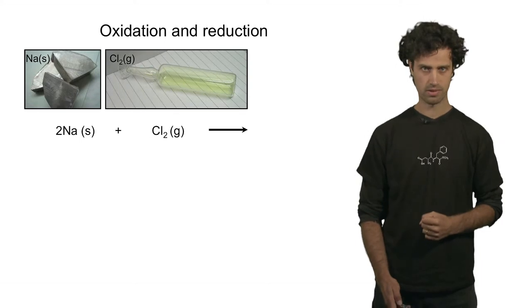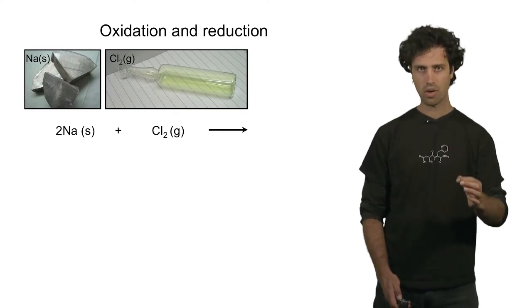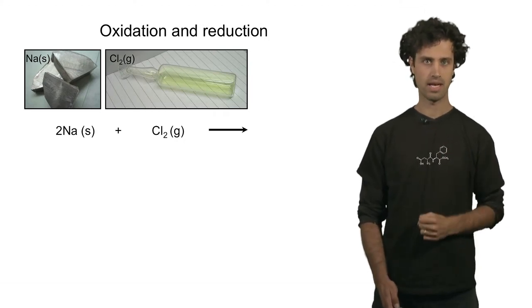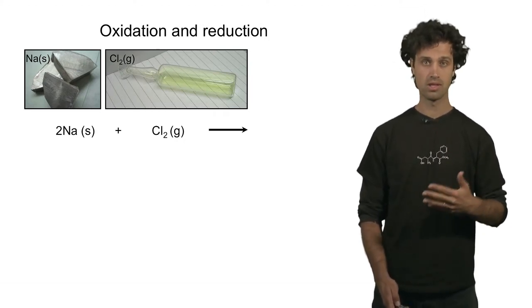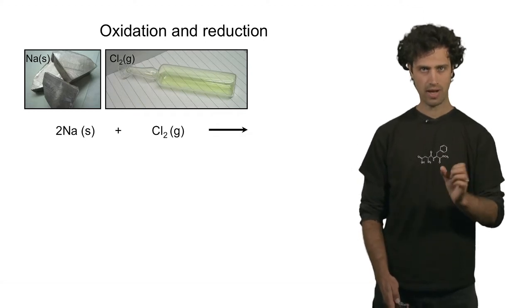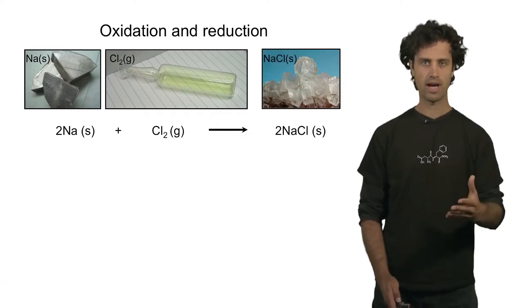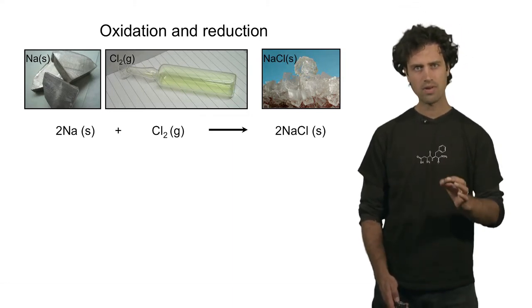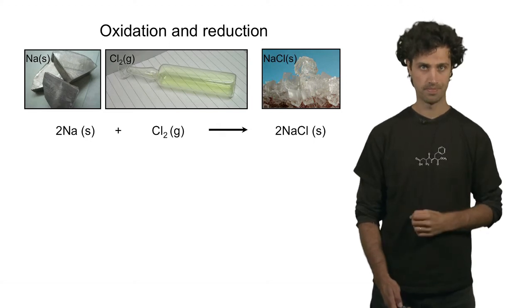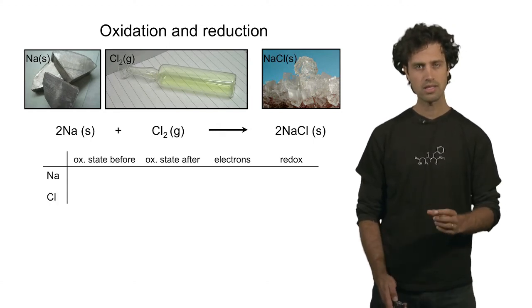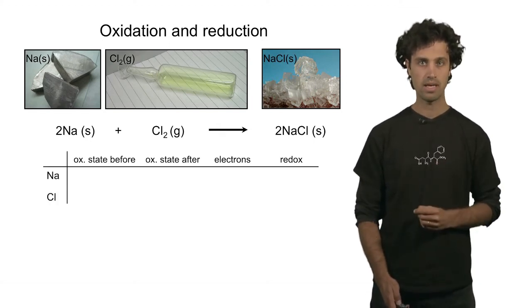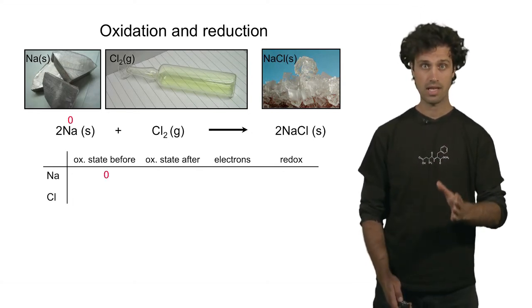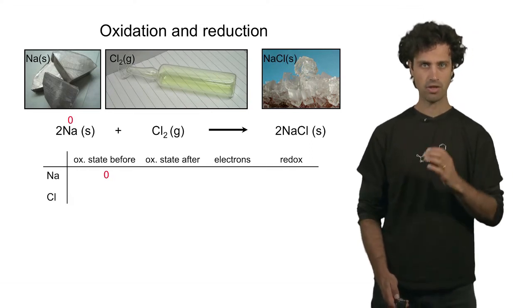Let's look at these two materials. We see solid sodium — elemental sodium, which is a metal — and chlorine in its elemental form, which is a gas. These two materials can interact to form sodium chloride, which is a solid salt. This is a redox reaction. Now, let us have a closer look at what happens during this reaction. The oxidation state of sodium is zero before the reaction starts, because sodium is in its elemental form.